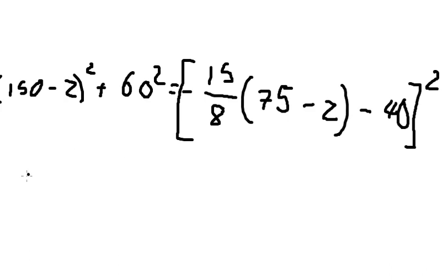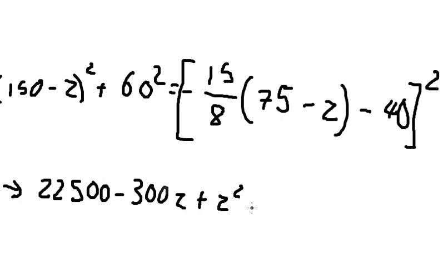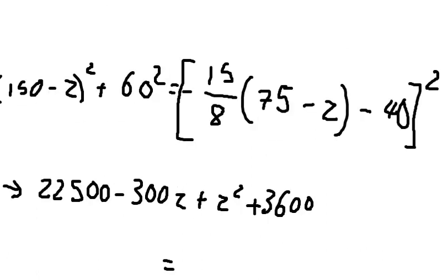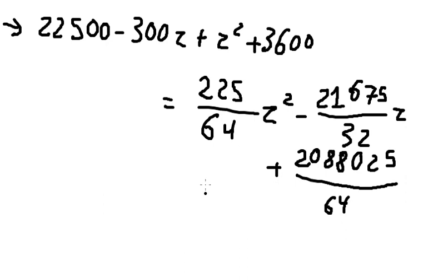So we need to expand this one, and we have 22,500 - 300z + z² + 3,600. About this one, we need to expand and we have something like this. Now we can simplify with this one and this one, so we have this equation.